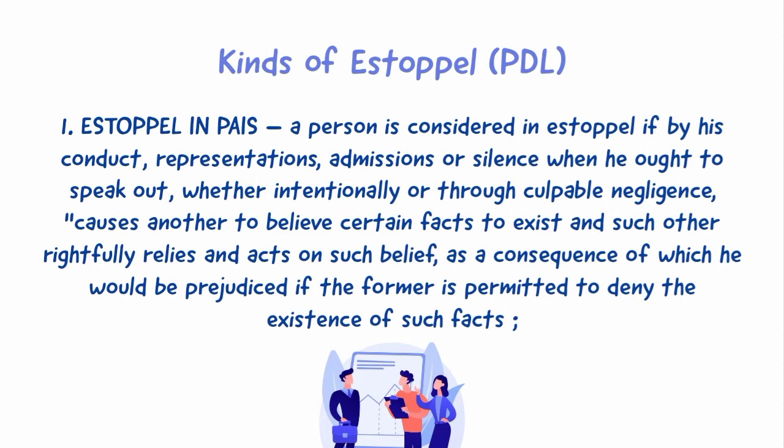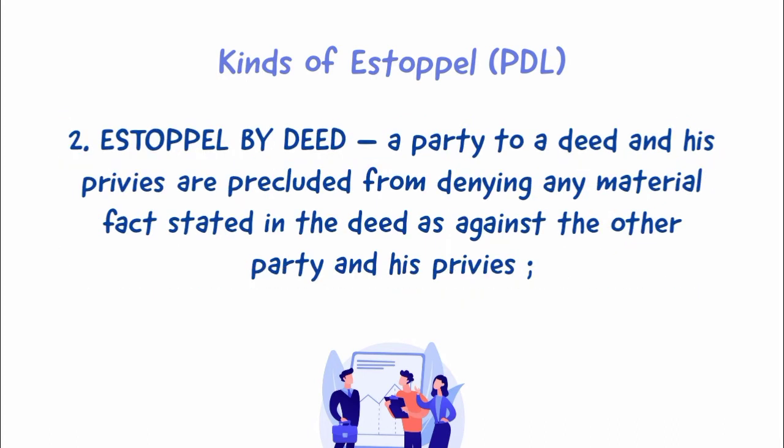Kinds of estoppel. 1) Estoppel in pais: a person is considered in estoppel if by his conduct, representations, admissions, or silence when he ought to speak out — whether intentionally or through culpable negligence — causes another to believe certain facts to exist, and such other rightfully relies and acts on such belief, as a consequence of which he would be prejudiced if the former is permitted to deny the existence of such facts.